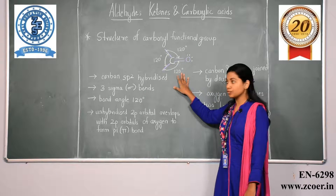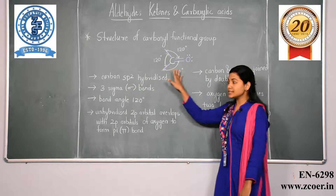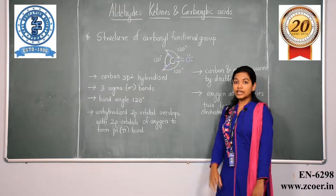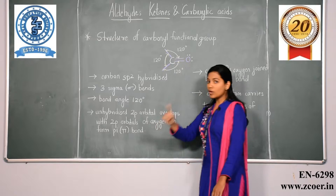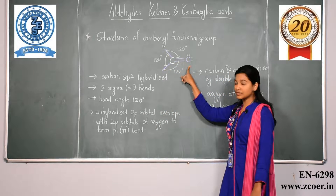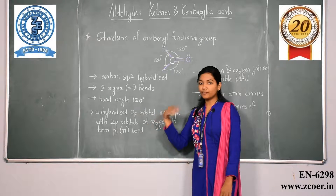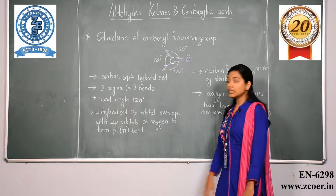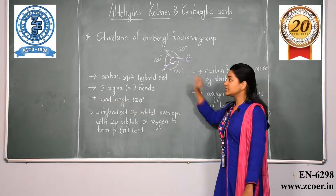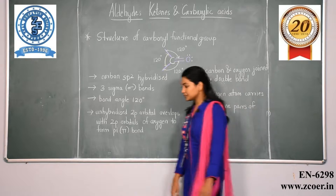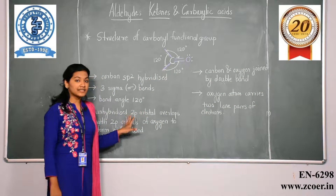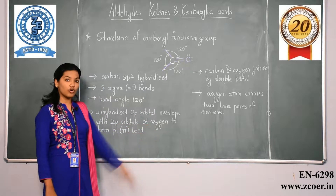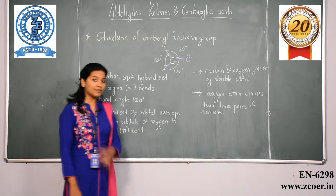In the carbonyl functional group, the carbon present is sp2 hybridized. It forms three sigma bonds, one of which is formed with oxygen, while the remaining two bonds can be formed either with hydrogen or with carbon. The bond angle between these bonds is 120 degrees, and the unhybridized p orbital of carbon overlaps with a p orbital of oxygen to form a pi bond.